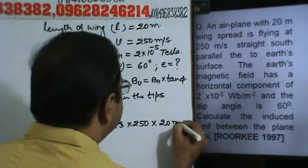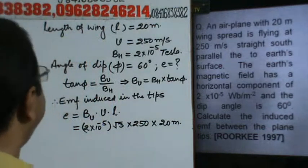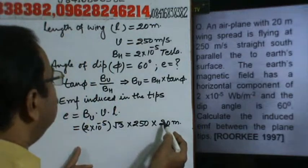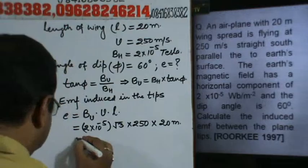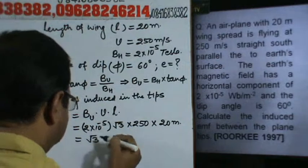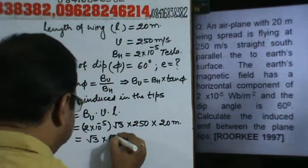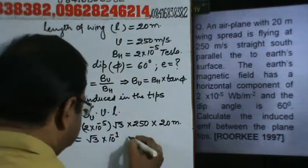L is equal to 20 meters. Now we calculate: 2 times 25 equals root 3 into 10 to the power minus 1, which will be equal to root 3 into 10 to the power minus 1.